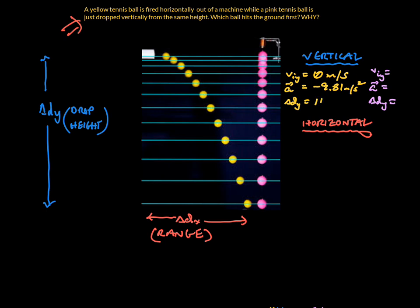For the pink tennis ball, Delta D Y was also zero meters per second because it was simply dropped. The acceleration is also -9.81 and the drop height was the same, 100 meters.